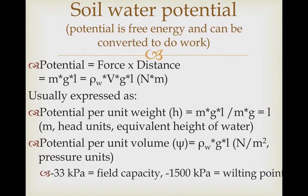We can actually define some things in terms of potential. Field capacity — all the water that can be stored in a soil and not drain vertically due to gravity — is often defined as occurring at negative 33 kilopascals. The wilting point, the point at which plants can no longer extract water from the soil, is negative 1500 kilopascals. In other words, the force with which plants can take up water is less than 1500 kilopascals. If we get to a potential smaller than negative 1500 kilopascals, the plants can't counter that and they can't get it out of the soil.